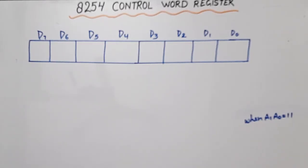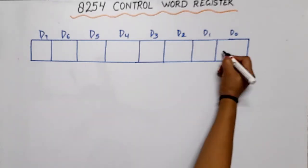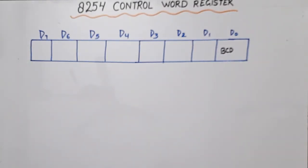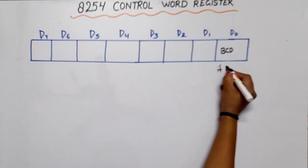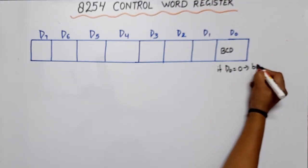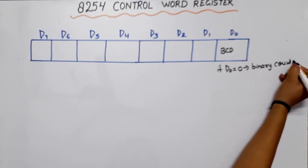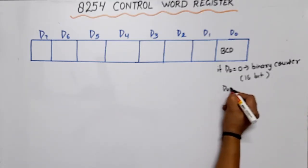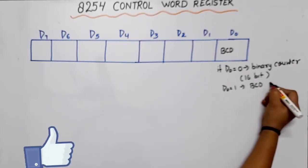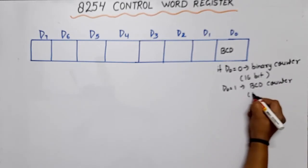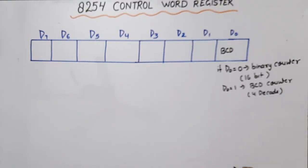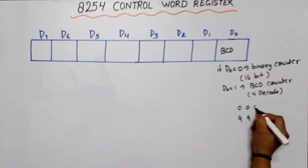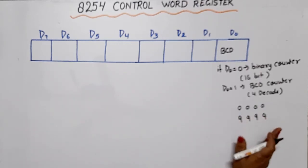Starting with D0: D0 is the BCD bit. This bit decides whether the counter will work as a binary counter or a BCD counter. If D0 equals 0, it will work as a binary counter. If D0 equals 1, it will work as a BCD counter. One BCD digit equals four binary bits. With four BCD digits, you can count four decades: 0 to 9, 0 to 9, 0 to 9, 0 to 9 — that is, ten thousand counts.